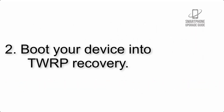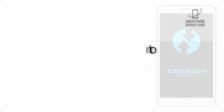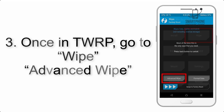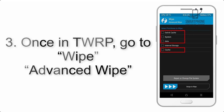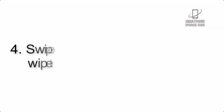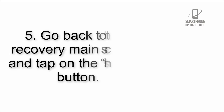Step 2: Boot your device into TWRP recovery. Once in TWRP, click on Wipe, then Advanced Wipe, and select the checkboxes as shown in the image, excluding internal storage. Step 4: Swipe the button to wipe the device.